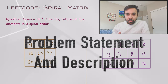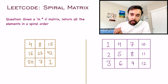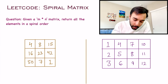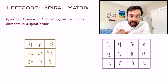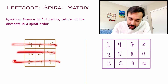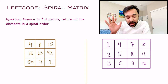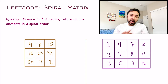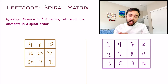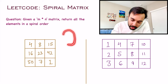First of all, I want to quickly make sure that we are understanding the problem statement correctly. In this problem, you are given an M×N matrix — that means it has M rows and N columns. Now you have to return all of the elements in a spiral order. So what does a spiral order actually mean? A spiral is a pattern that looks like this.